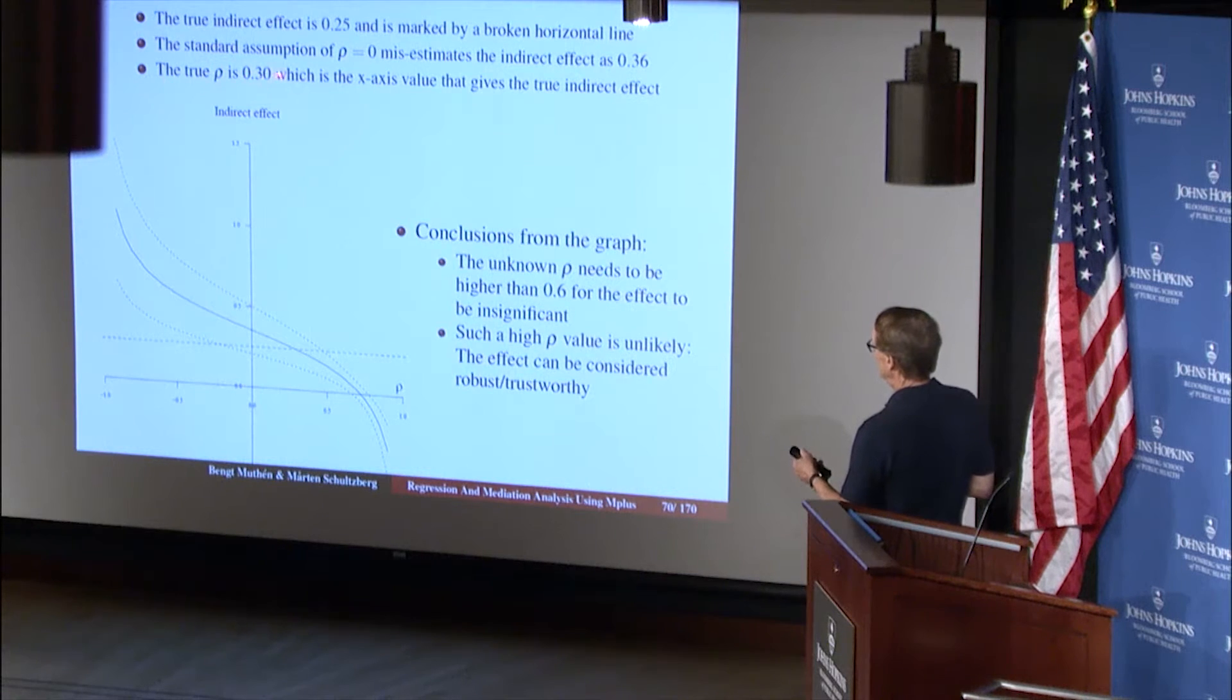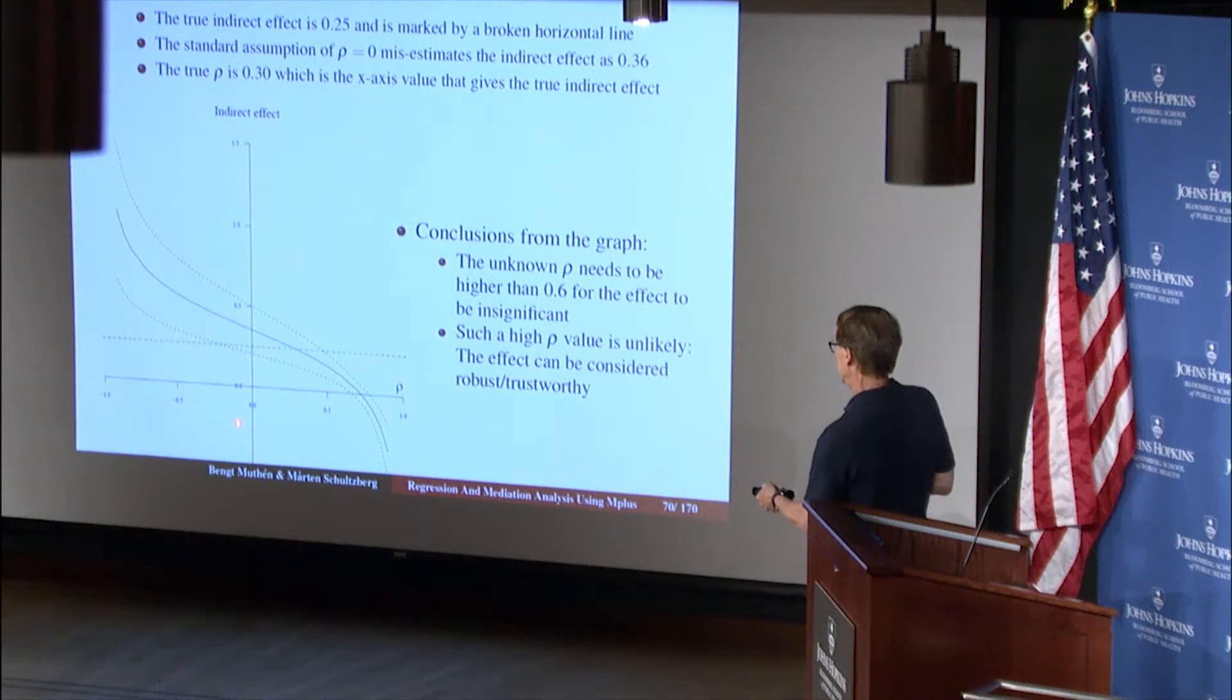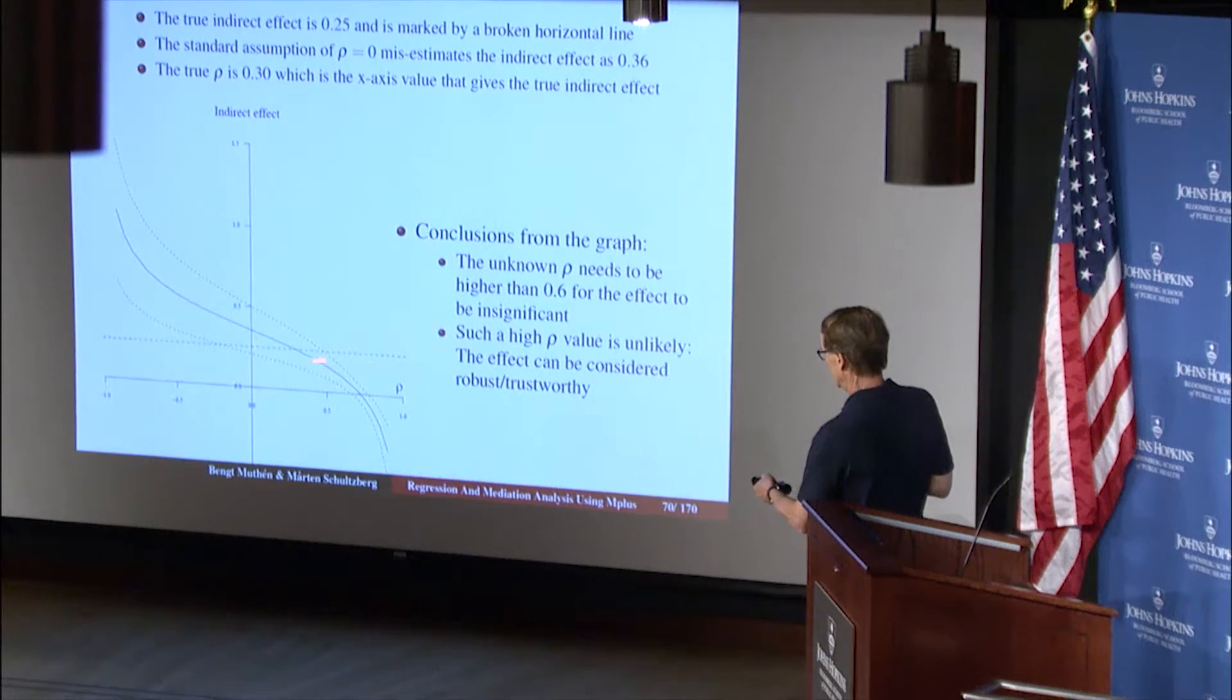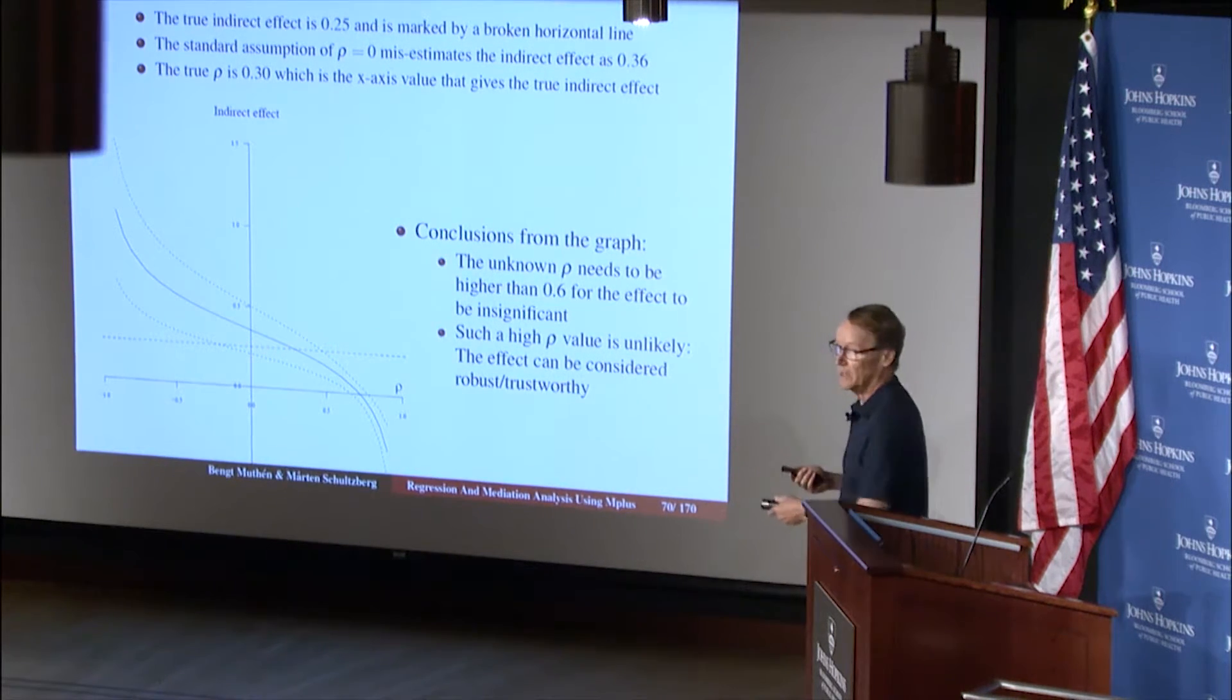The true rho is 0.30. So we generate data with true rho 0.30, and that is here. If you draw a line down to this, this hits the rho value of 0.3. So that is when, if you were fixing rho at its true value, 0.3, you would get the right indirect effect value of 0.25.